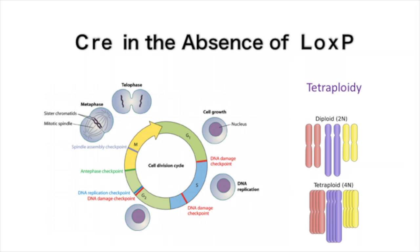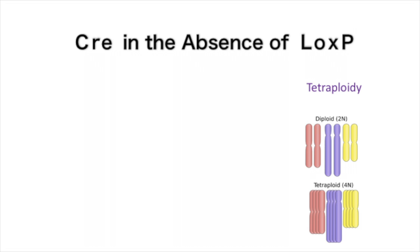By employing live cell imaging, an extension of the G2 phase of cell division was observed, followed by the absence of mitosis. Tetraploidy must be avoided as it can lead to aneuploidy — an abnormal number of chromosomes in a cell — which itself is a hallmark of cancer.